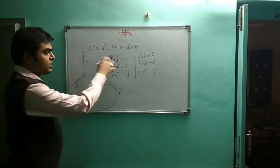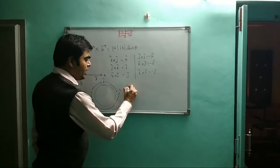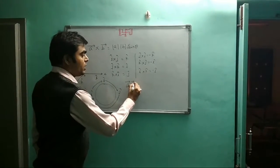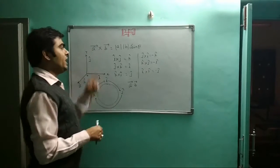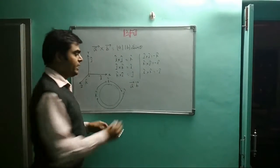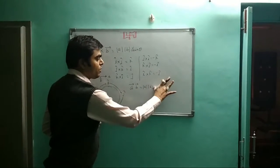Now for A dot B, the dot product uses cos theta, whereas the cross product uses sin theta. So mod A mod B cos theta for dot product.